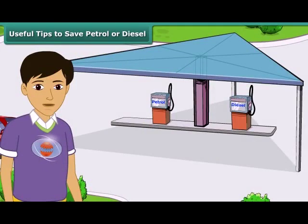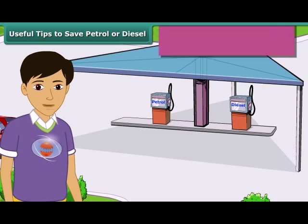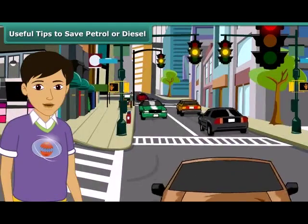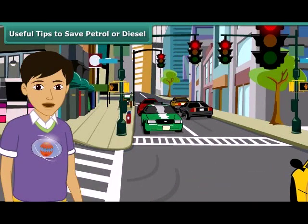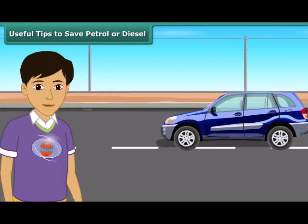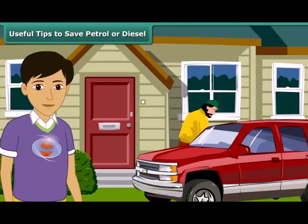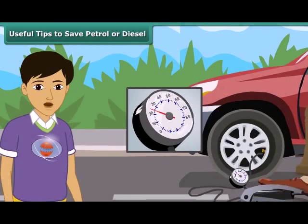Friends, petrol and diesel are exhaustible resources — their amount in nature is limited and will deplete one day. It is important to use these resources carefully. Here are a few useful tips from the Petroleum Conservation Research Association (PCRA): 1. Switch off the engine at traffic lights or traffic jams. 2. Drive at a constant and moderate speed as far as possible. 3. Ensure regular maintenance of the vehicle and correct air pressure in tires.